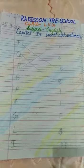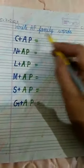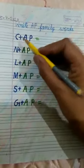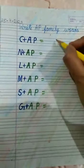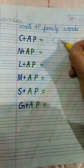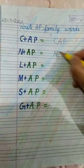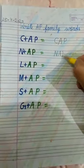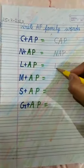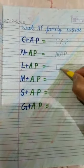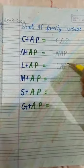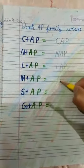Then the second work is: first of all, write here date 25-4-20, then class work. This is F family words. So we will complete this whole page and all the pages.